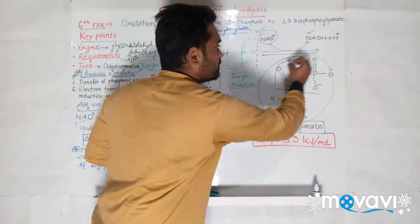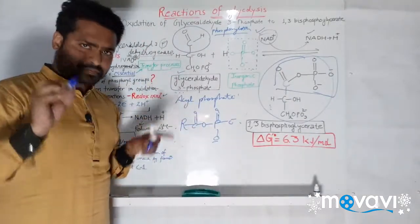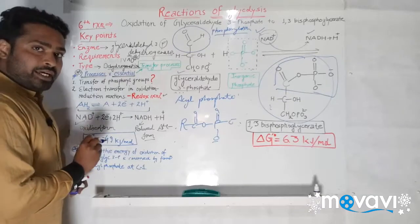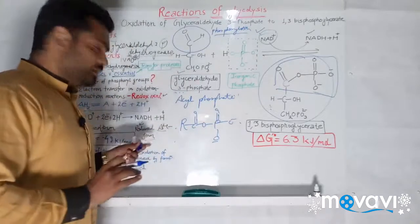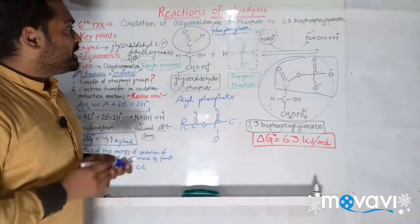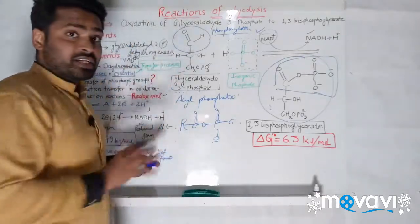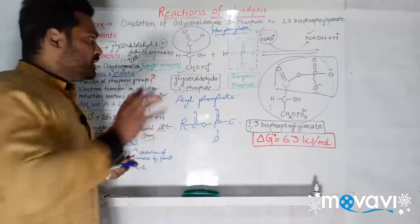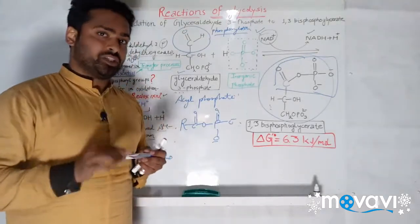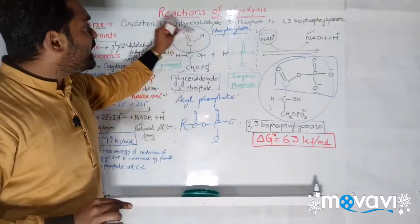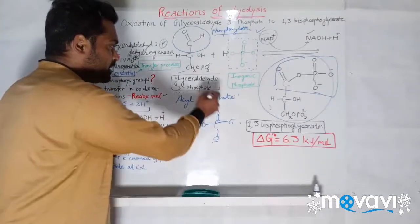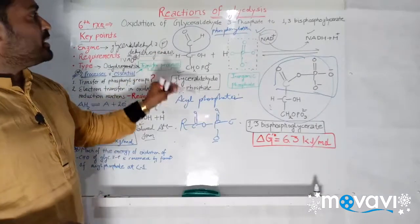The acyl phosphate has very high free energy content. The ΔG for this is −49 kJ/mol — you don't need to remember these numbers, they are just for understanding. The energy content is increased, and we are going to use this energy to make ATP. Much of the energy of the oxidation of the aldehyde group in glyceraldehyde 3-phosphate is conserved in the acyl phosphate group.